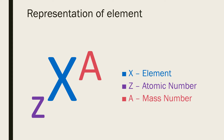Generally, the atomic number and mass number of an atom of an element are represented by a symbol like X with Z and A, where X is the element. The number of protons present in the nucleus of an atom is known as the atomic number, and it also represents the number of electrons in the orbit. It is denoted by Z.